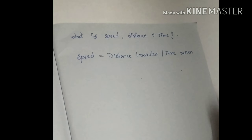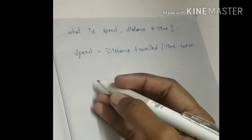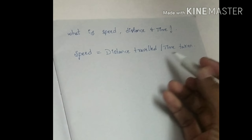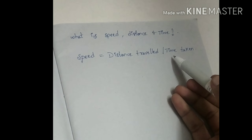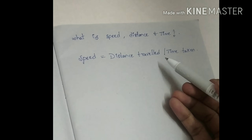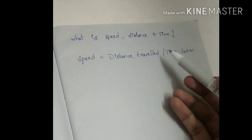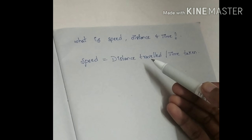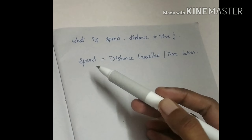The formula for time is distance divided by speed, and the distance formula is speed multiplied by time.